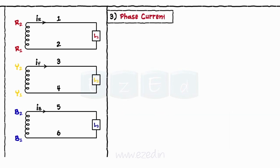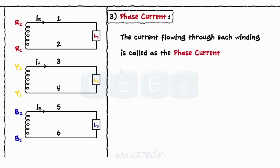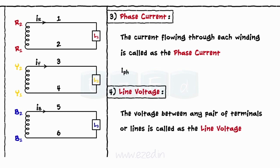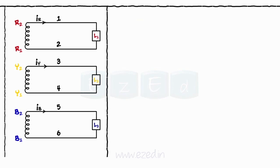The current flowing through each winding is called as the phase current IPH. Thus the phase currents are IR, IY, and IB. The voltage between any pair of terminals or lines is called as the line voltage. VRY, VYB, and VBR are the line voltages.